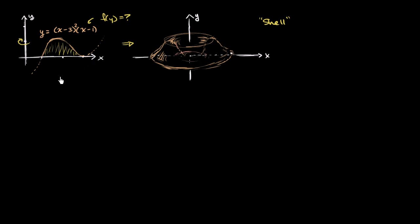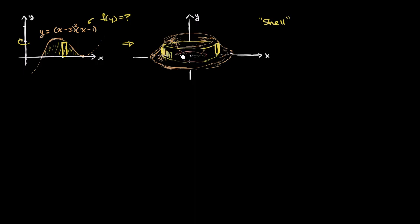Instead of constructing disks, we're going to construct shells. For each x in the interval, we can construct a rectangle on this cross-section. When we rotate that rectangle around the y-axis along with everything else, it's going to look something like a hollowed-out cylinder — that's why we call it a shell. It's going to have a depth of dx.